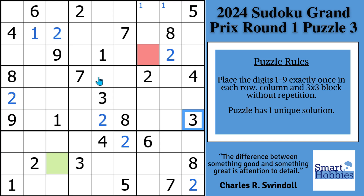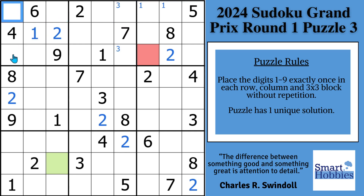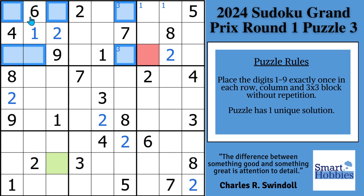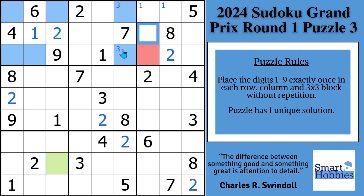Now we're going to look at what a claiming pair is all about. You see you have these two 3s right here — there's two possibilities for a 3 in block 2. I'm going to mark that with Snyder notation. Now, if you scan across block 1 and block 2, you'll notice over here in block 1, where can the 3 be? It can be up here in row 1 or row 3. Since the 3s are limited to rows 1 and 3 in blocks 1 and 2, we know the 3 has to be somewhere in row 2, so it's limited in row 2 to block 3.